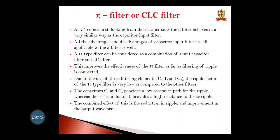Due to the use of three elements — capacitor, inductor, and capacitor — the ripple factor of the PI filter is very low compared to the others. Capacitors C1 and C2 provide a very low reactance path for the ripple, whereas the series inductor provides a high reactance to the AC ripple. The combined effect is the reduction in ripples and improvement in the output waveform.